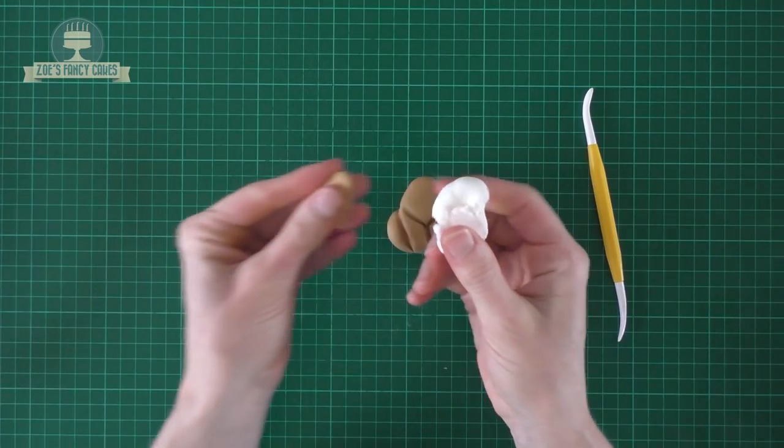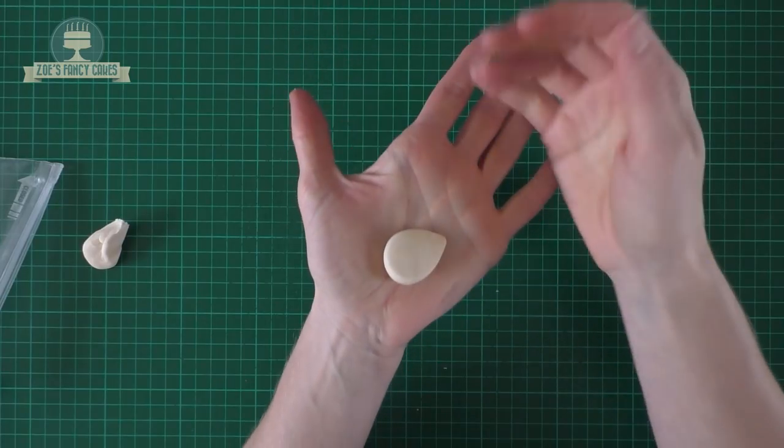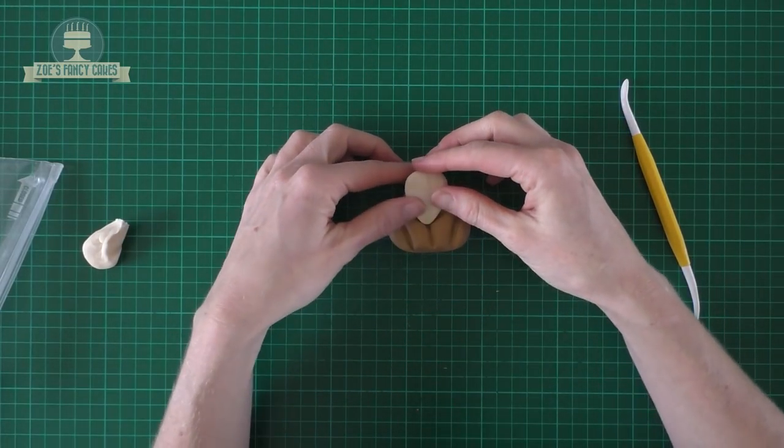For a bit of a paler brown, we'll just mix it with a bit of white and we're going to roll a teardrop shape, give it a bit of a squish down flat and we're going to pop this onto the front of the rabbit.